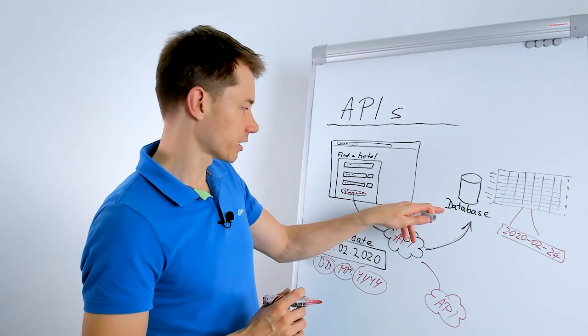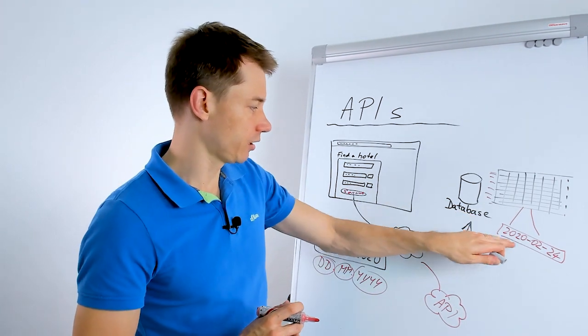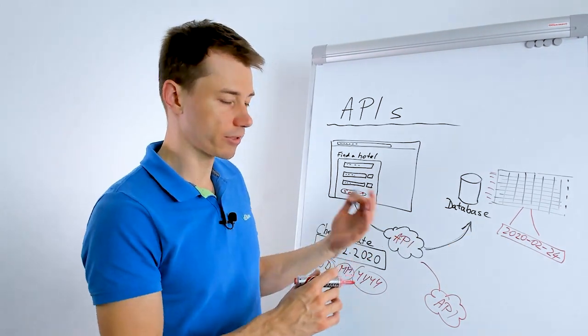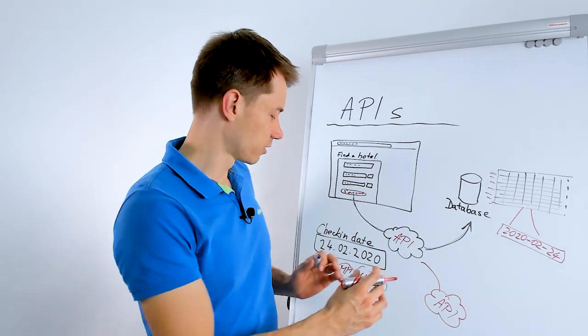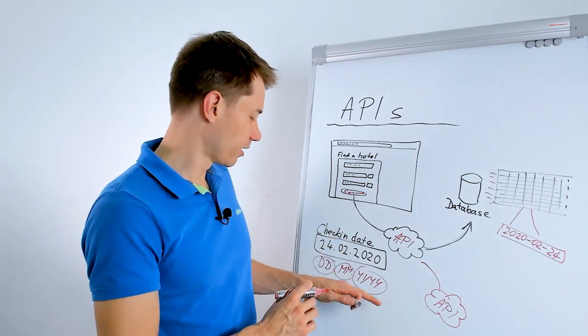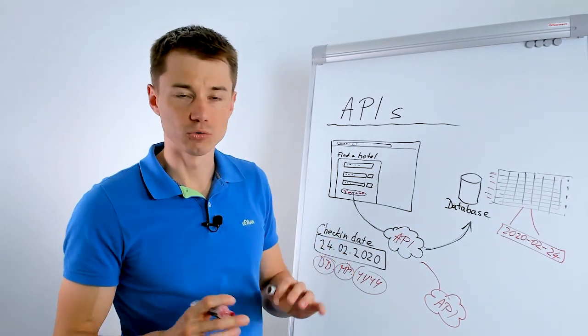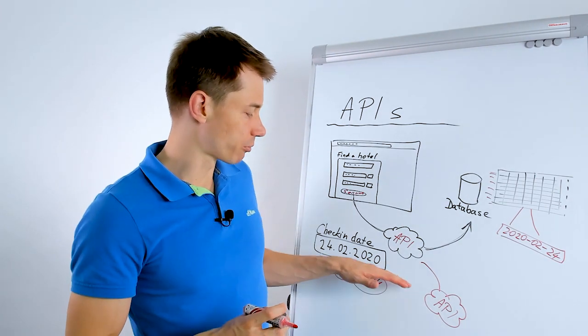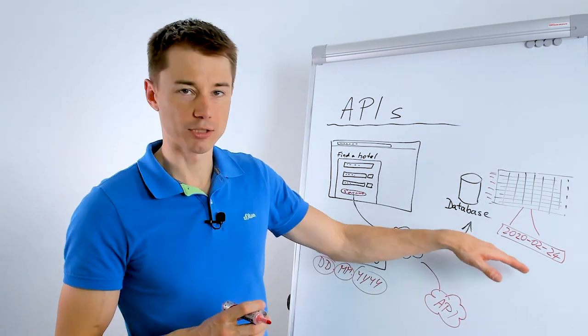So here, say, if you know that a database needs a date in this format, then you know that you need to program it in a way that it transposes the date to different format. And you could come up with lots of different examples how an API could connect to another API.